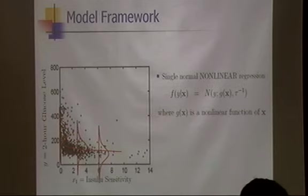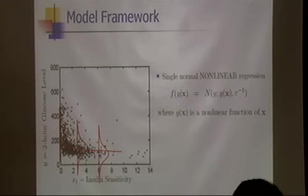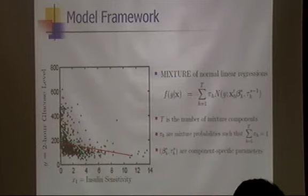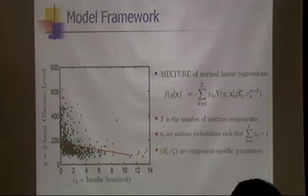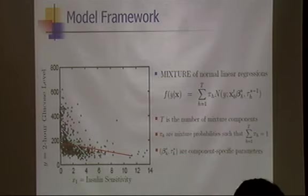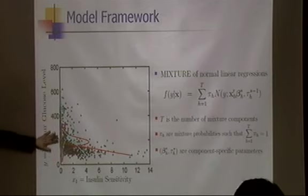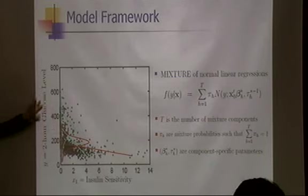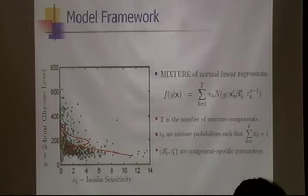One can consider a mixture of normal linear regression model. Here T is the number of mixture components — two, three, four, or five — and the pi_h are mixture probabilities summing to one. The beta_h-star and tau_h-star are component-specific regression parameters. Mixing two or three normals instead of one gives a more flexible density shape estimate.